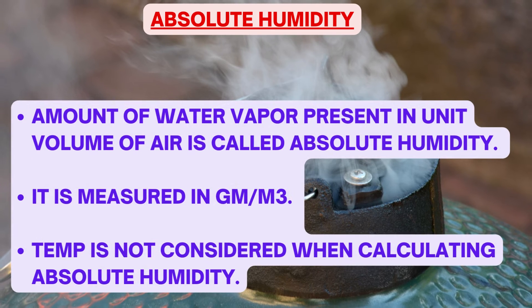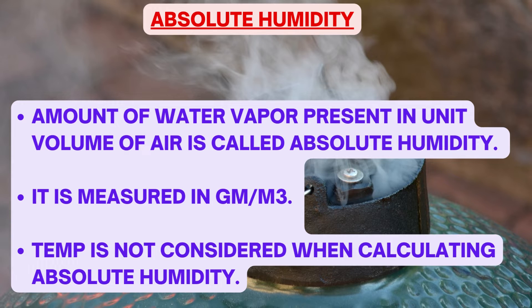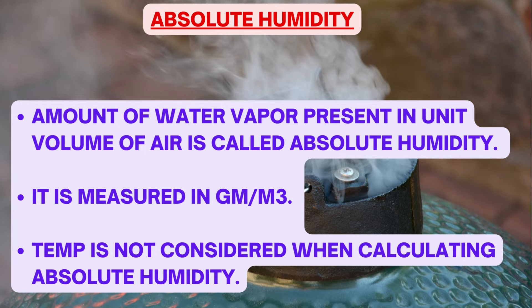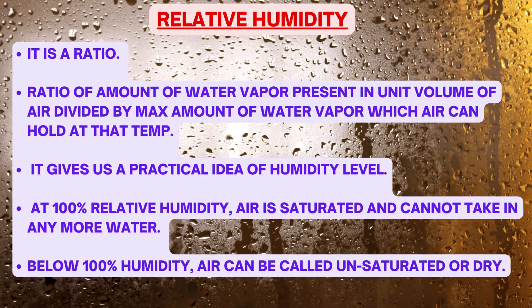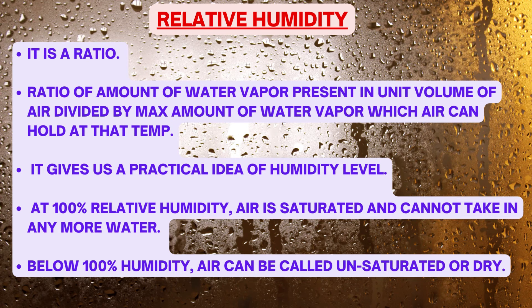Measuring humidity: humidity is measured either by finding absolute humidity or relative humidity. Absolute humidity is the amount of water vapor present in a unit volume of air, measured in grams per meter cube; temperature is not considered when calculating absolute humidity. Relative humidity is a ratio of the amount of water vapor present in unit volume of air divided by the maximum amount of water vapor the air can hold at that temperature. At 100% relative humidity, air is saturated and cannot hold more water vapor; below 100% it is unsaturated or dry.